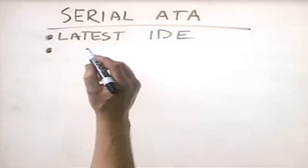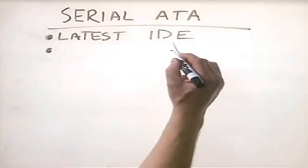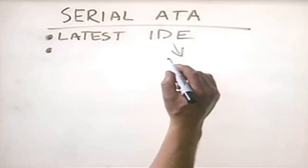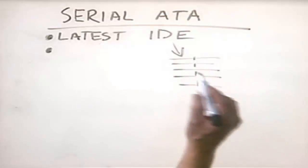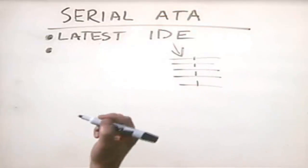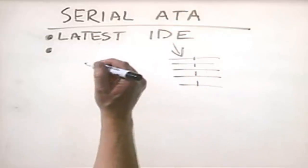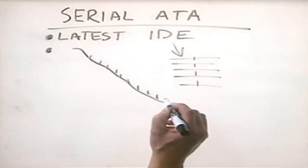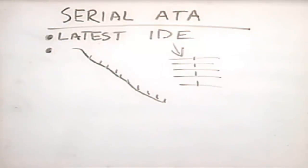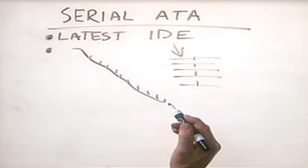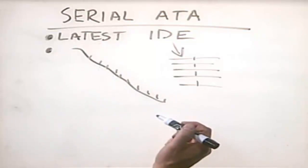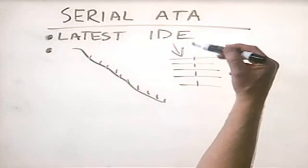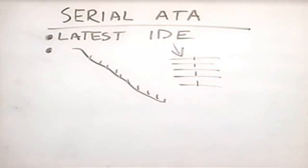One key difference is the manner in which it transfers data. Instead of transferring data in parallel fashion the way IDE, enhanced IDE, and PATA do — over a series of wires simultaneously — serial ATA uses a single wire that transfers data in a serial fashion. At first that might seem slower, but because of the way signaling works on a serial ATA system, you can actually transfer data faster one bit at a time than on an older IDE or PATA system transferring multiple bits at a time.